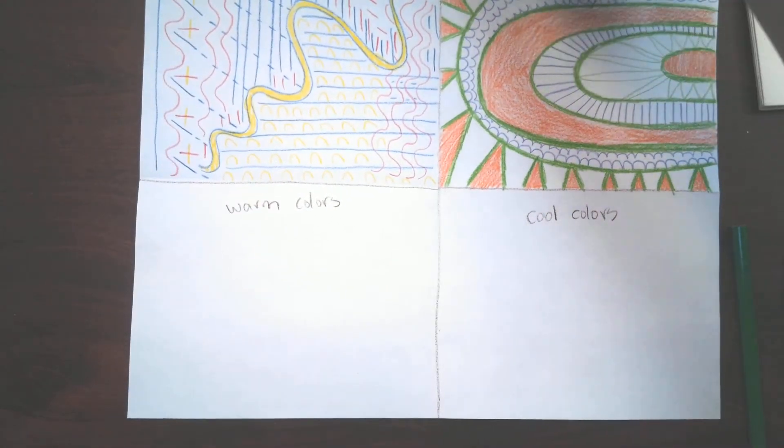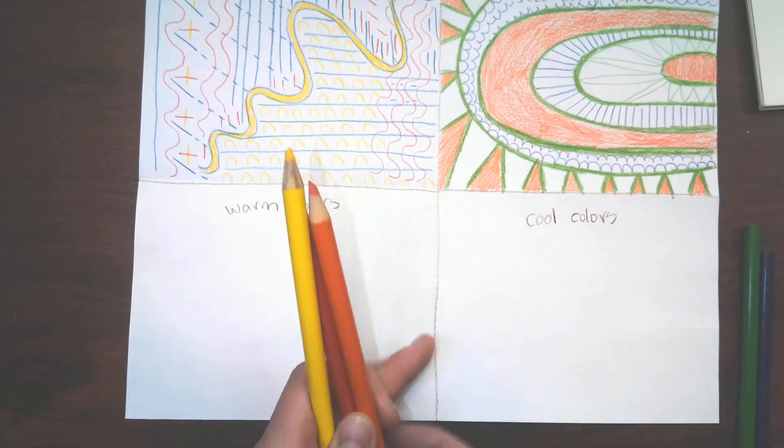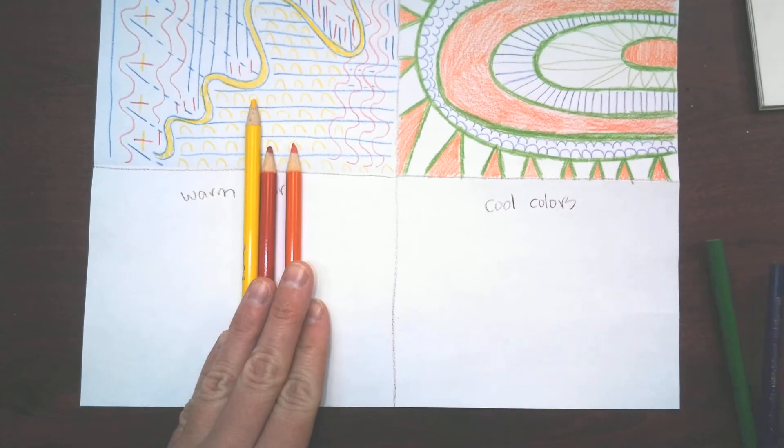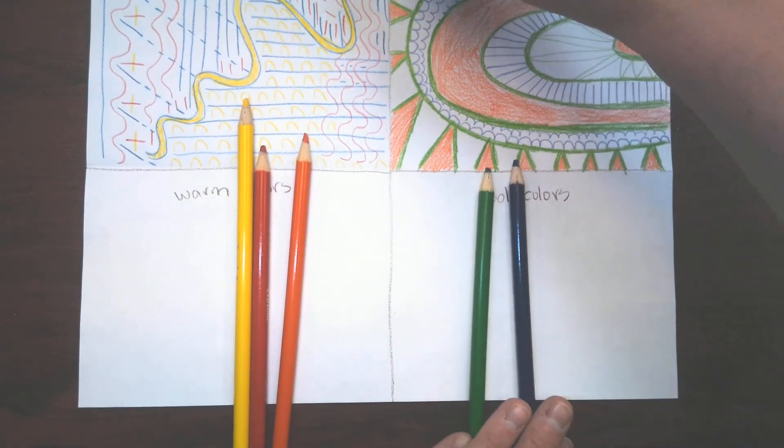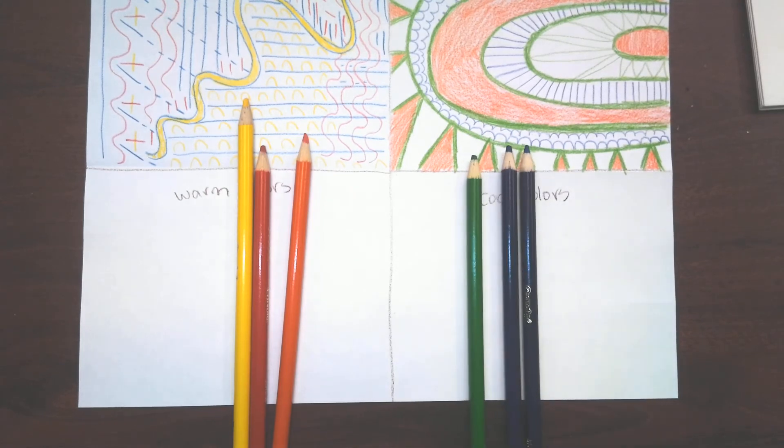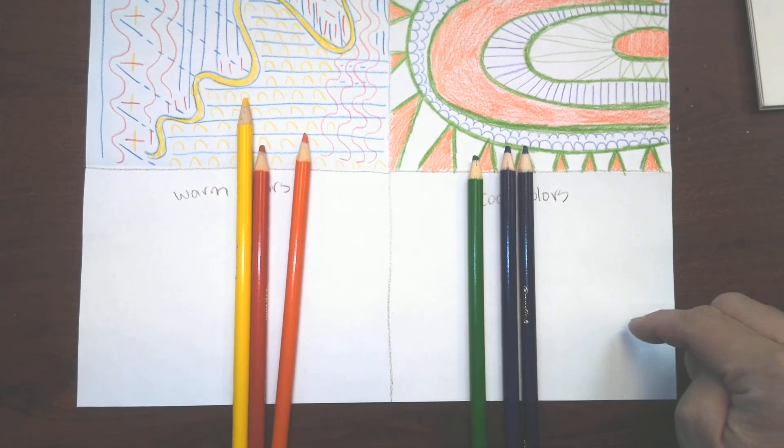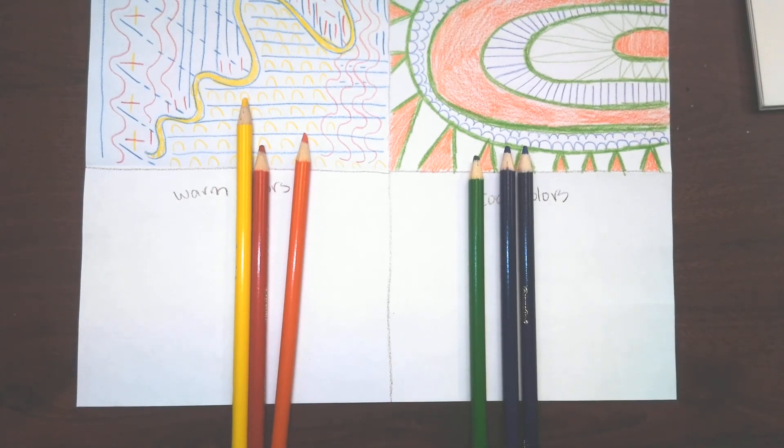My warm colors are red, yellow, and orange. And my cool colors are green, purple, and blue. My purple and blue look the same on the screen but they're different in real life. So you're going to do your warm colors in this square and your cool colors in this square. All right, I'm excited to see what you come up with. Bye!